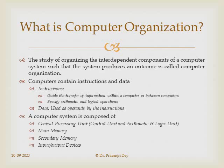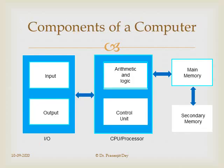A digital computer is composed of: firstly, the central processing unit, which is composed of a control unit and arithmetic logic unit; secondly, main memory, which is directly accessible by the CPU; thirdly, secondary memory, which is indirectly accessible by the CPU; and fourthly, input/output devices.